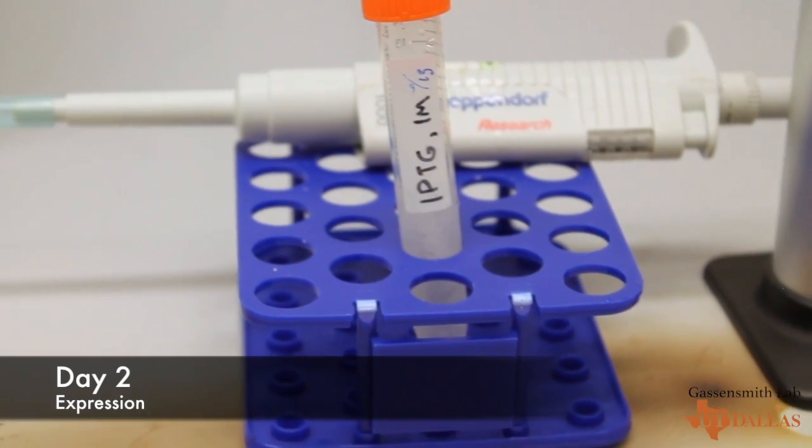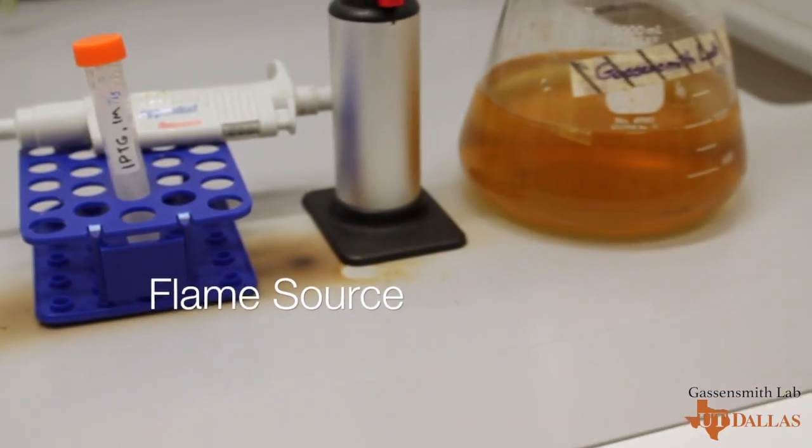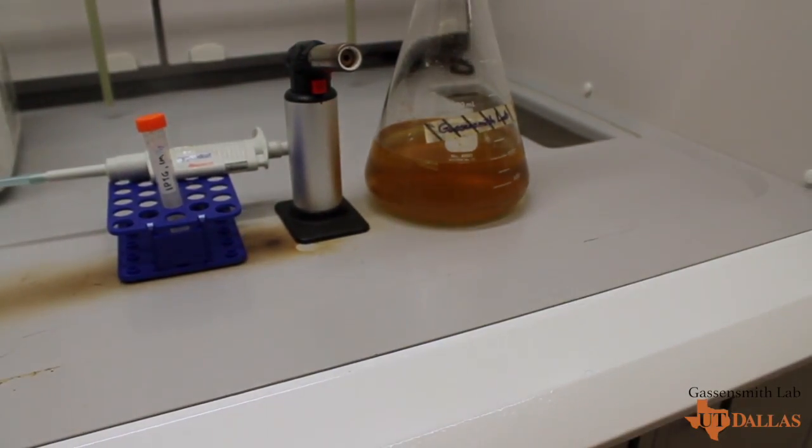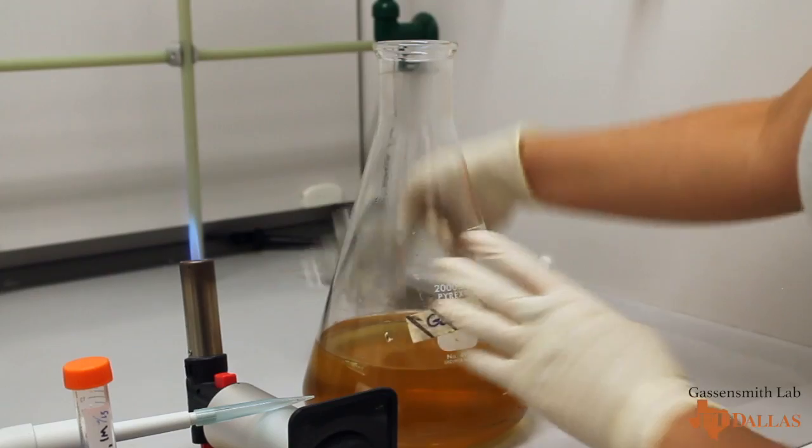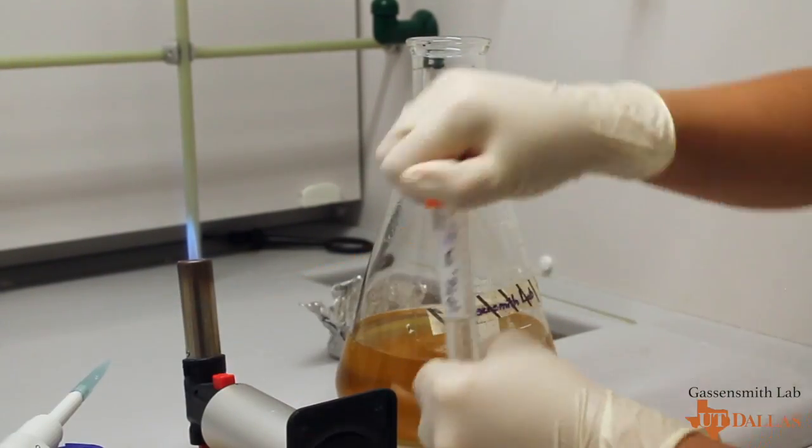Next we'll be expressing the proteins within the media. We'll need one molar IPTG, a flame source, and your inoculated media. Add one milliliter of IPTG to the media and leave on the shaker overnight.